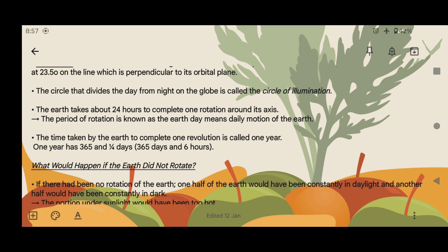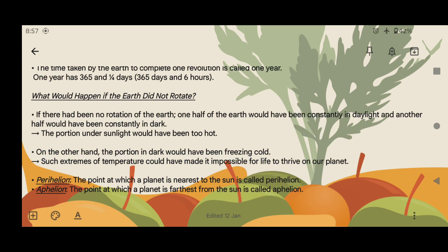What would happen if the Earth did not rotate? If there had been no rotation of the Earth, one half of the Earth would have been constantly in daylight and another half constantly in dark. The portion under sunlight would have been too hot. On the other hand, the portion in dark would have been freezing cold. Such extreme temperatures could have made it impossible for life to thrive on our planet.